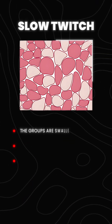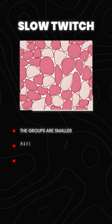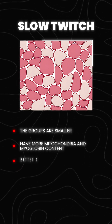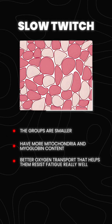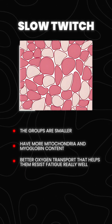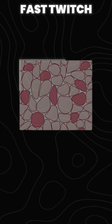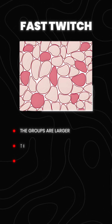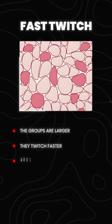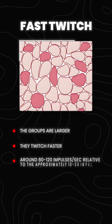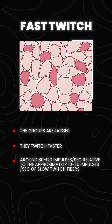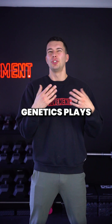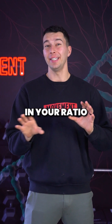The groups of slow twitch fibers are smaller, but they have more mitochondria and myoglobin content for better oxygen transport. That helps them resist fatigue really well. By contrast, the groups of fast twitch fibers are larger, and they do literally twitch faster, around 80 to 120 impulses per second, relative to the approximately 10 to 30 impulses per second of slow twitch fibers.